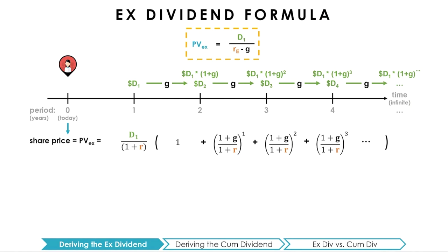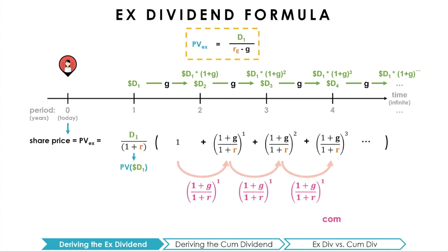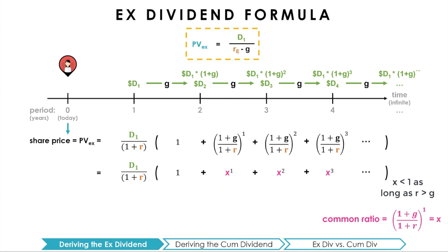Where we left off with the derivation of the ex-dividend formula, we realized that the stream of future dividends follows a pattern where the first term is the present value of the first dividend, and each term equals the previous term multiplied by (1+G)/(1+R) — the common ratio. This is the same structure as an infinite geometric series. We can substitute the common ratio (1+G)/(1+R) with a variable x. Thus, following the formula for the sum of an infinite geometric series, the sum equals our first term, D1/(1+R), all divided by (1 minus x).